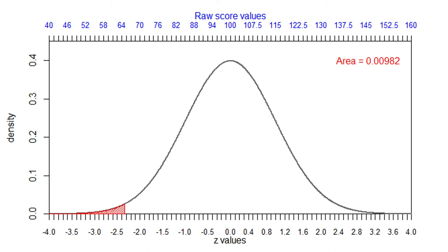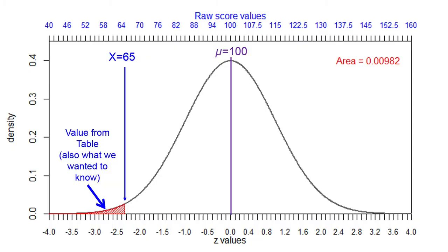Below them in a normal distribution, we have only 1%, slightly less than 1% of the area of the distribution. Therefore, less than 1% of the population, we would estimate, has IQs that low. Therefore, the probability of randomly selecting somebody is that same thing. It's 0.0098, it's 1% more or less.